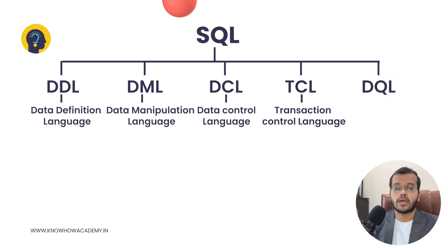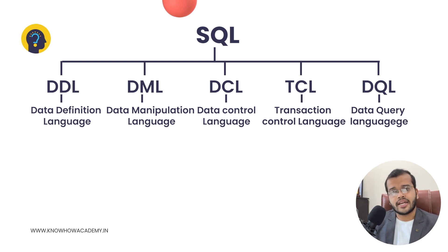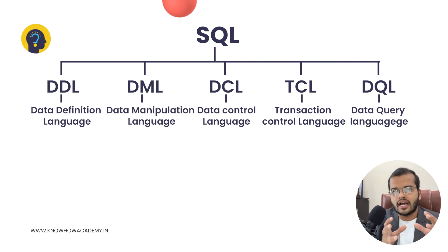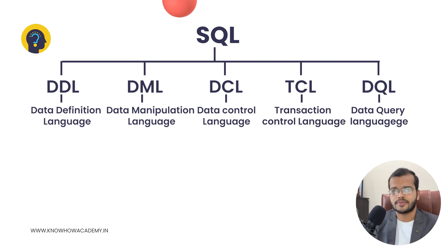And the next one is DQL — Data Query Language. So to recap: Data Definition Language is for when we don't have data and are creating it. Data Manipulation Language is for when we want to make changes to data we have defined. Data Control Language is for having control over that data. TCL — Transaction Control Language — gives control over the transactions done in the database. And DQL is Data Query Language.